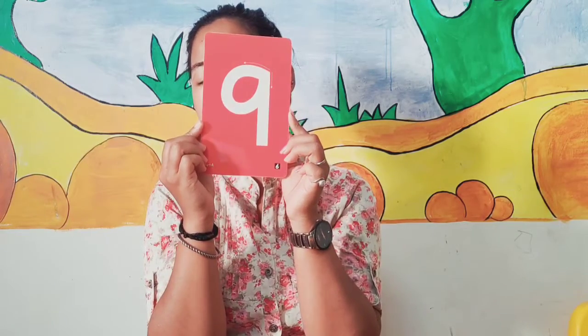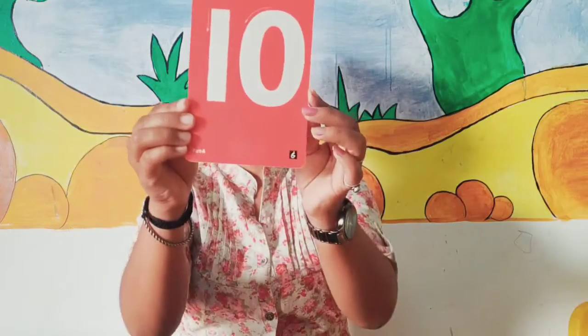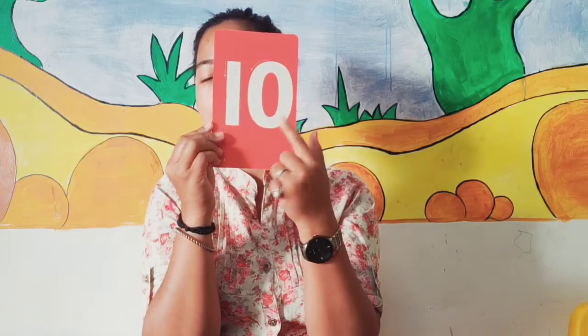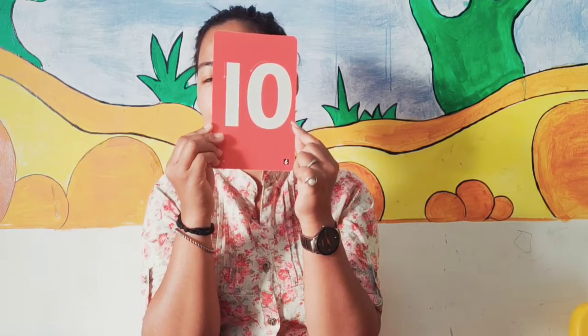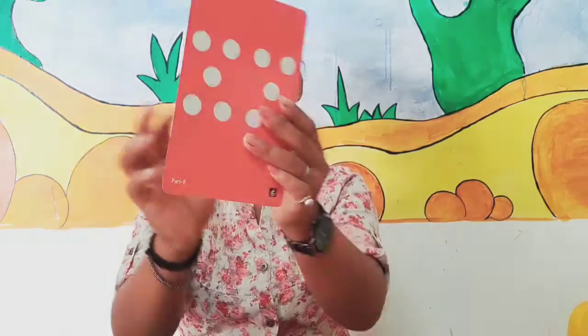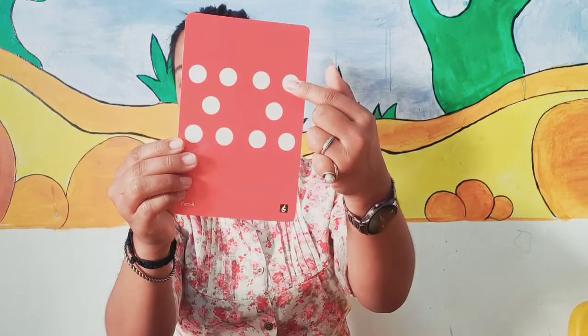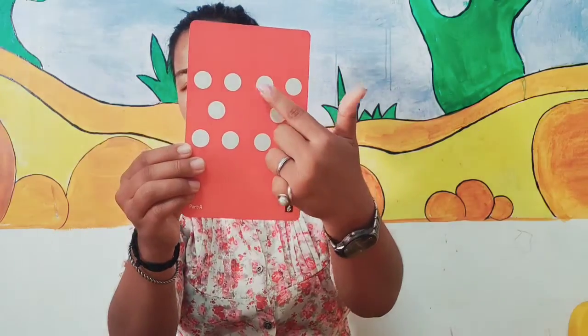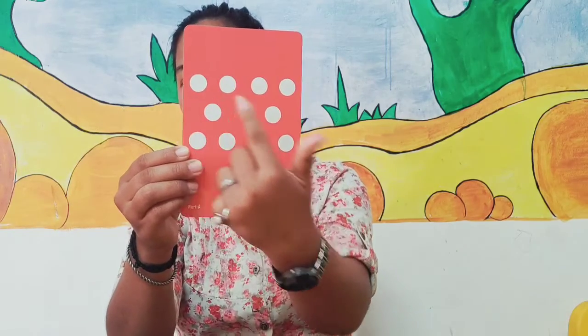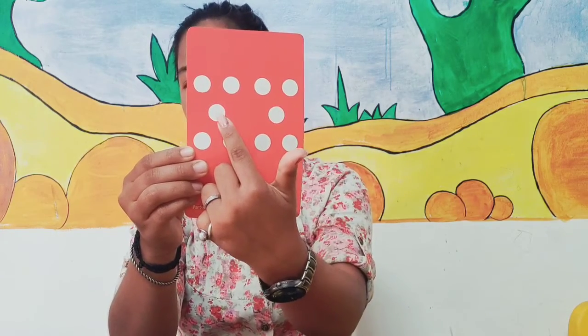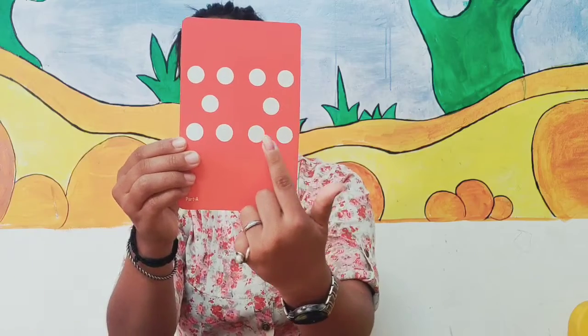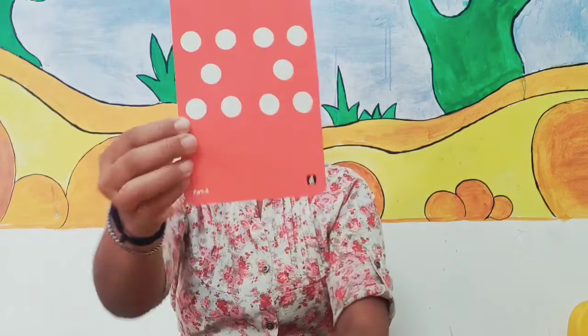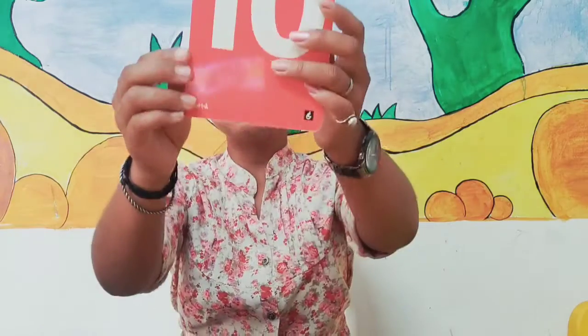Say 9. Very good. Now next number is 10. Which number is this? Very good. This is number 10. Let's count the dots: 1, 2, 3, 4, 5, 6, 7, 8, 9, 10. These are 10 dots and this is number 10. Very good — clap for everyone!